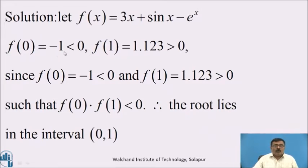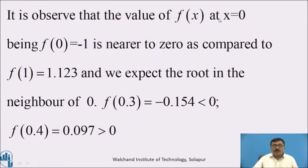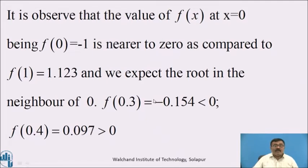That is, f(0) = −1, which is less than 0, and f(1) = 1.123, which is greater than 0. Since f(0) = −1 is less than 0 and f(1) = 1.123 is greater than 0, therefore the root lies in the interval [0, 1]. It is observed that f(0) = −1 is nearer to 0 compared to f(1) = 1.123, and we expect the root in the neighborhood of 0. For that, we find f(0.1), f(0.2), f(0.3), and so on, where the sign of f(x) again changes.